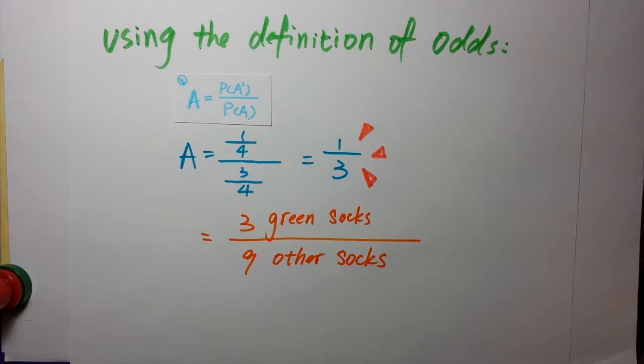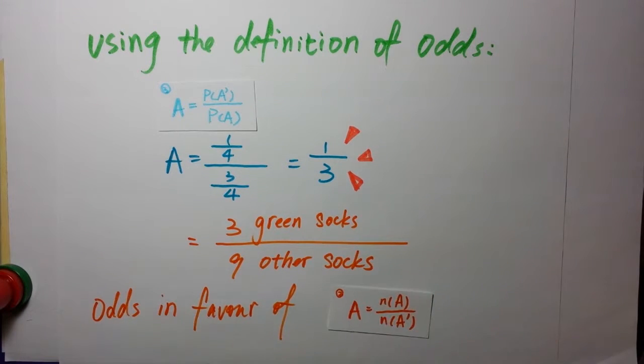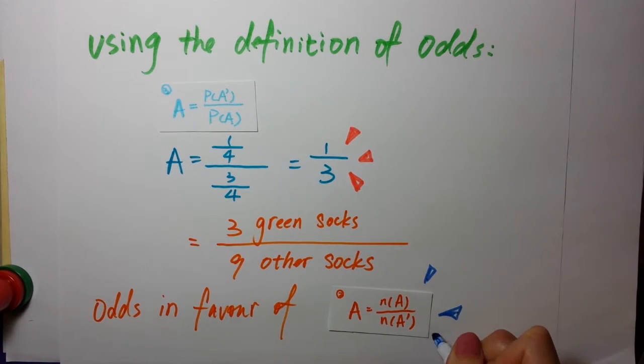In fact, the odds in favor of an event A can also be found using odds in favor of A equal to N(A) over N(A complement). So it's equal to 3 green socks over 9 other socks.